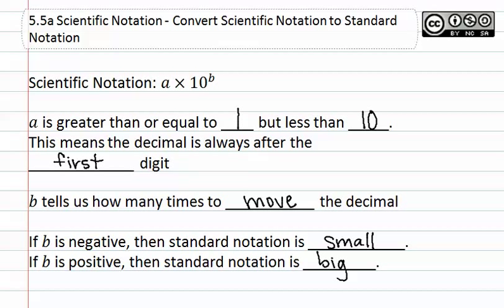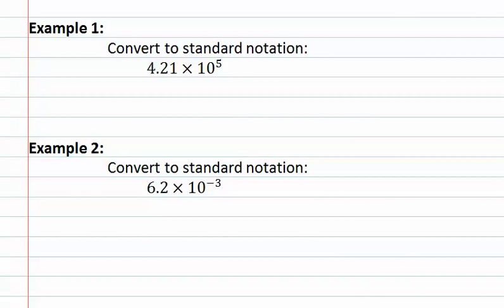Let's look at some examples. Example one asks us to convert to standard notation: 4.21 times ten to the fifth. We can see this is a positive exponent. If we have a positive exponent, we are going to have a big number. Since it is a big number and a positive exponent, we will move the decimal to the right.